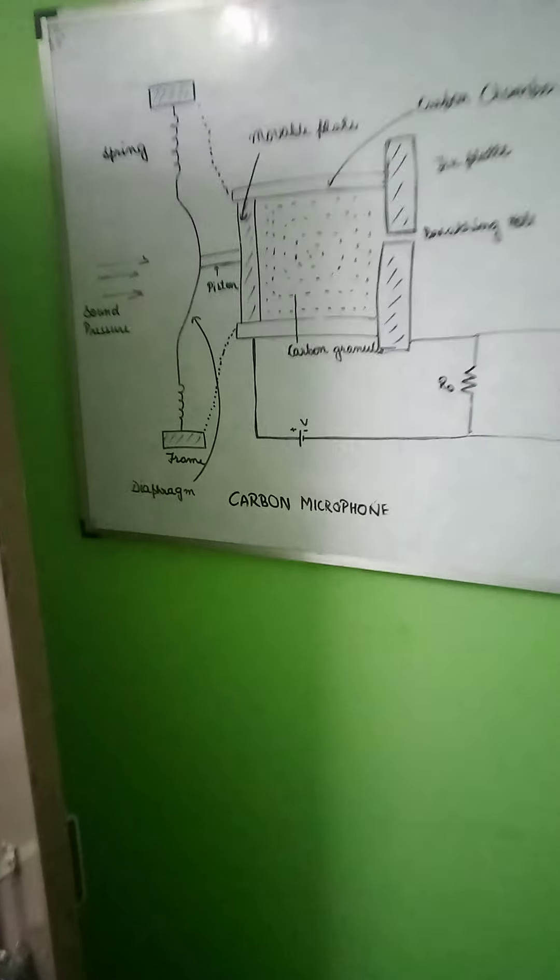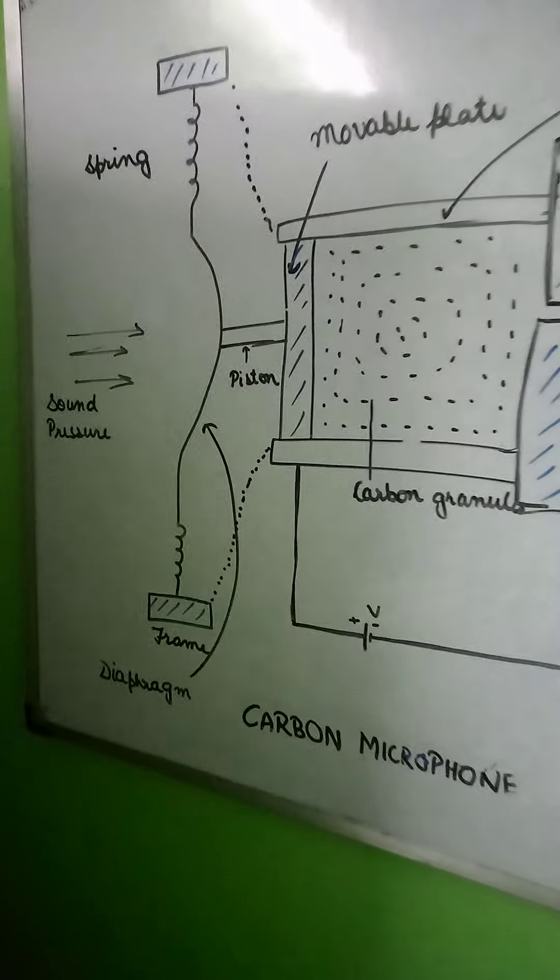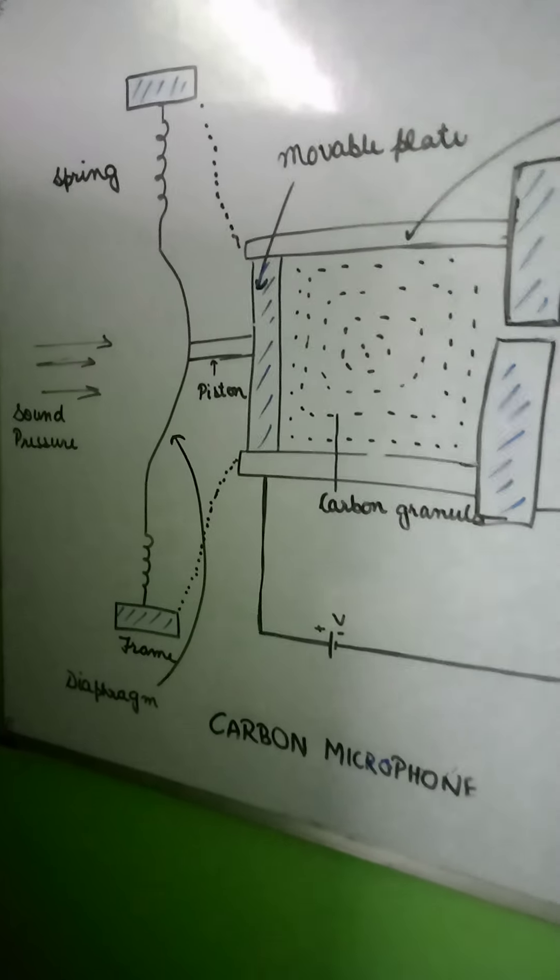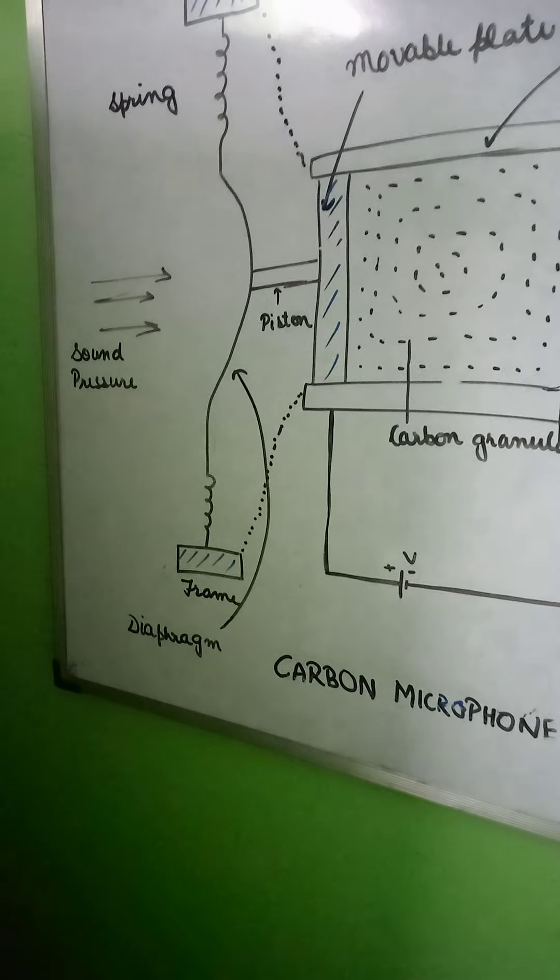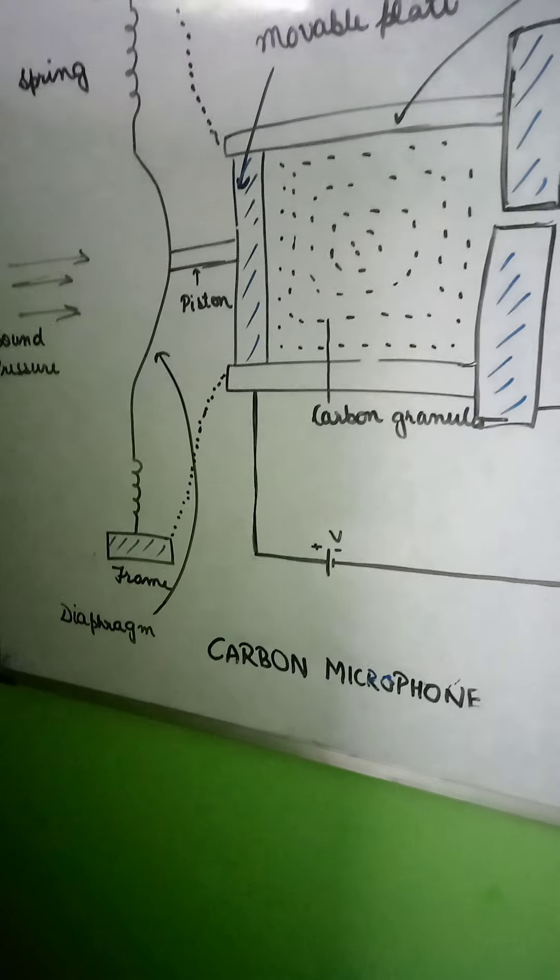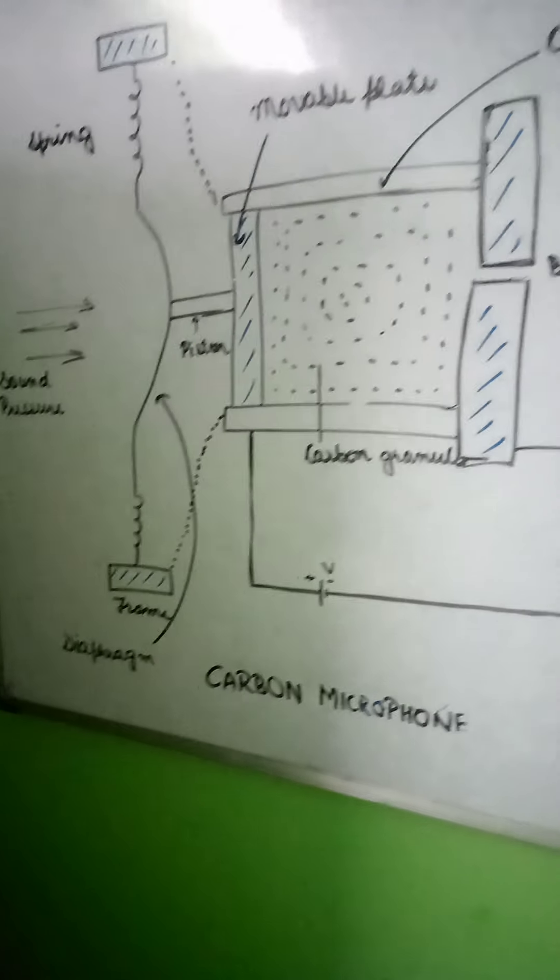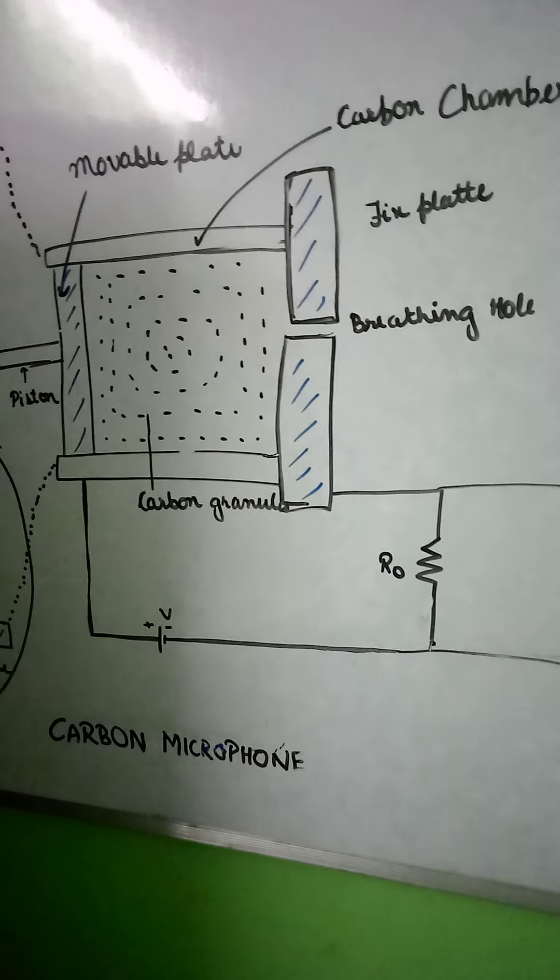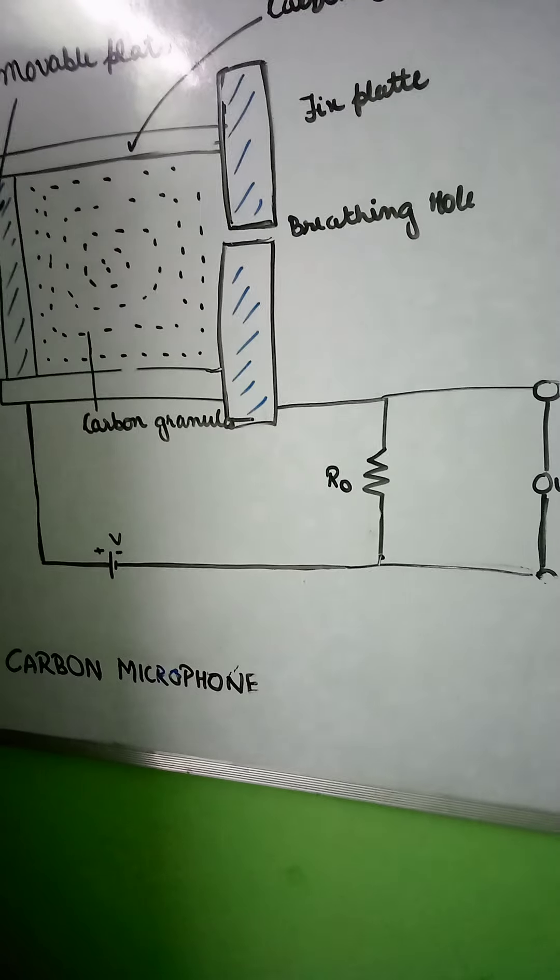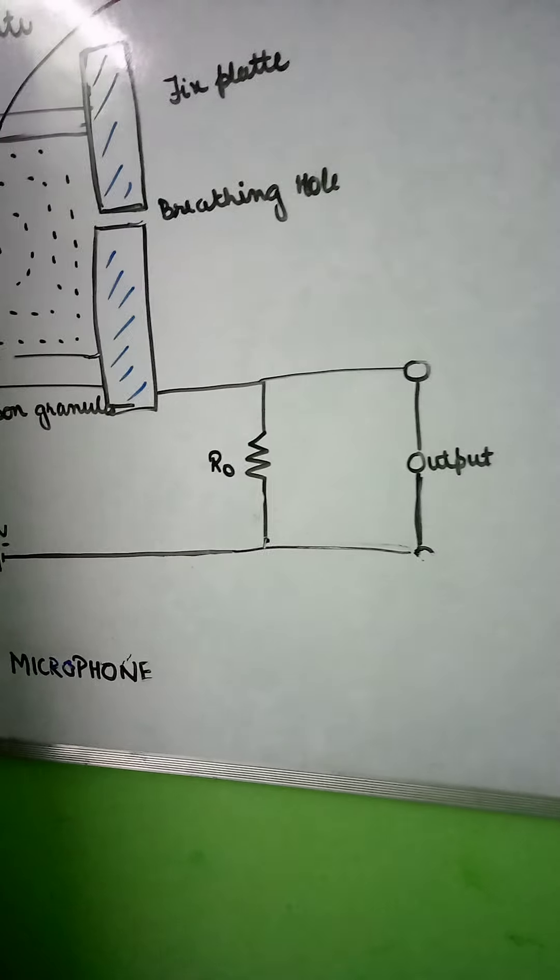This video is regarding the carbon microphone. We are seeing this spring here, and movable plate is there. From here sound pressure is there, and piston is there. Carbon granules are there, and carbon chamber is there. Fix plate is there, breathing hole is there, and one resistance is also there. And output is there as well as frame and diaphragm is there.